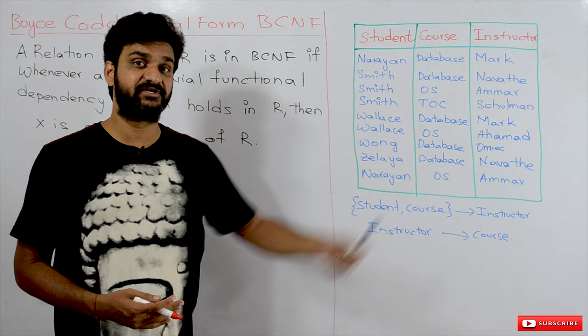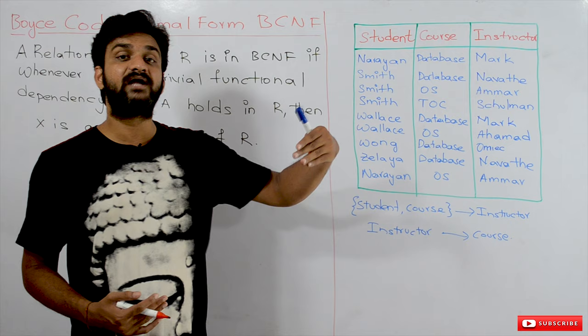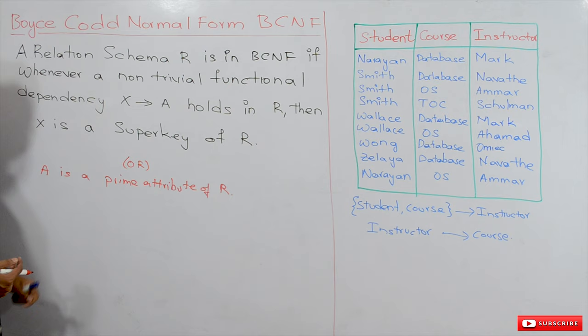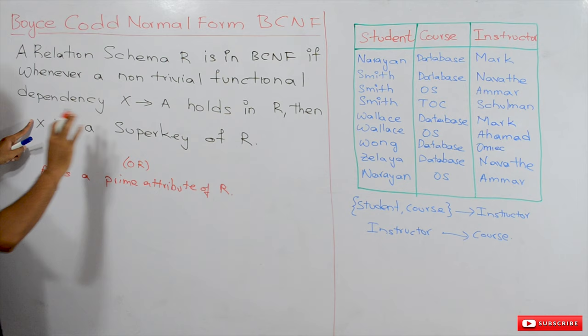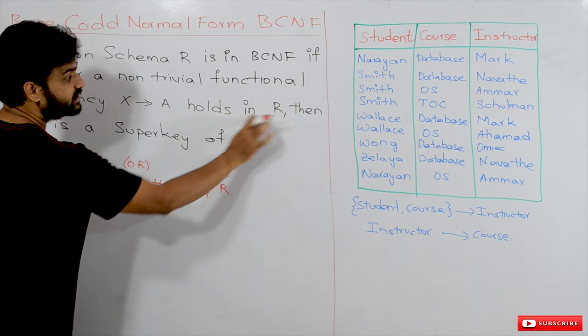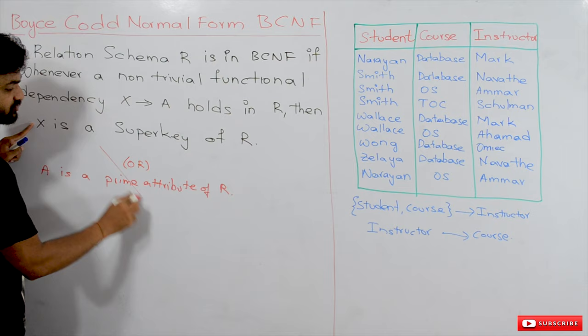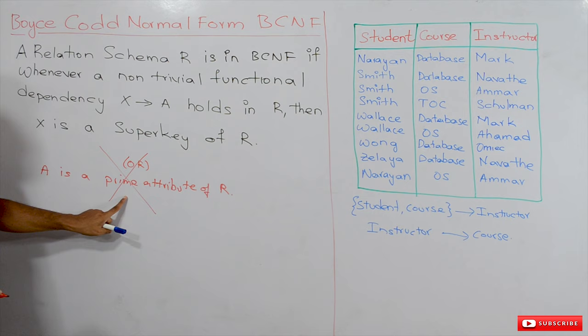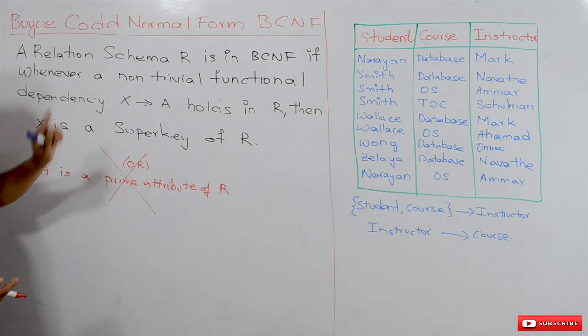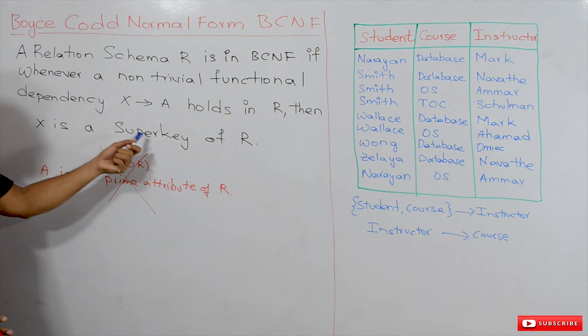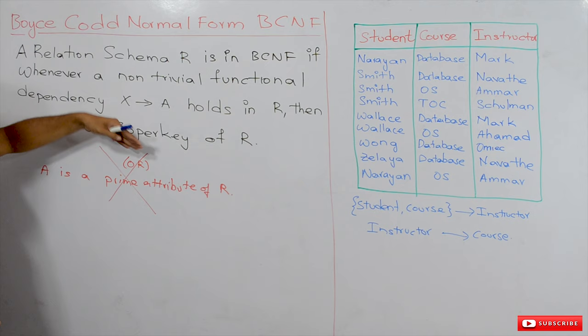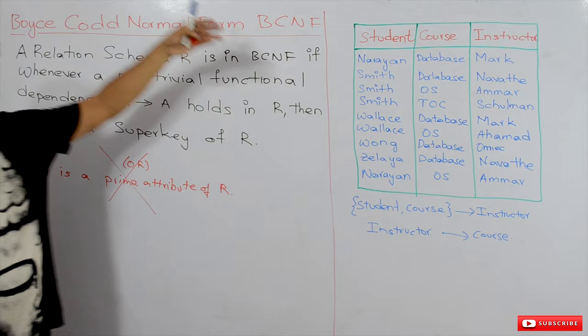The discussion about Third Normal Form and examples have been done in our previous videos. If you haven't watched those videos, please watch them and come back, because without understanding Third Normal Form it may not be possible to understand Boyce-Codd Normal Form. The BCNF definition states that whenever a non-trivial functional dependency X determines A holds in R, then X must be a super key of R — it is stricter because it does not allow the prime attribute property.